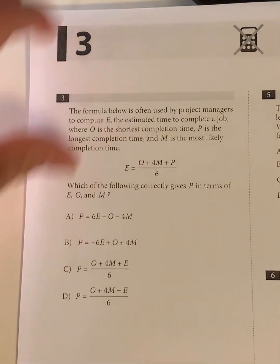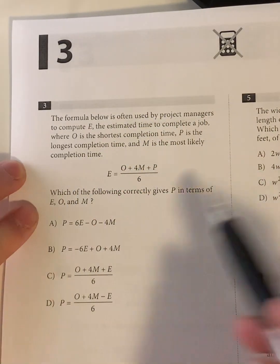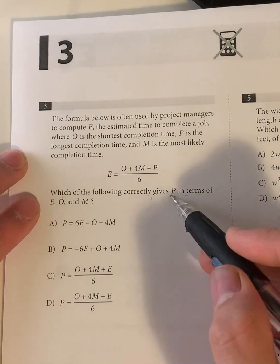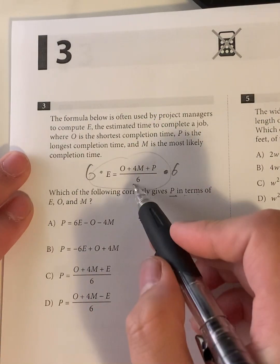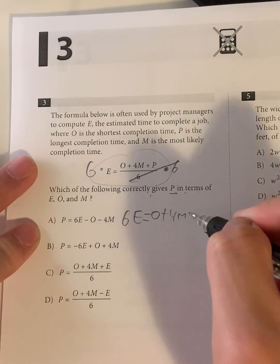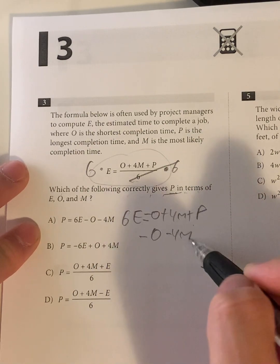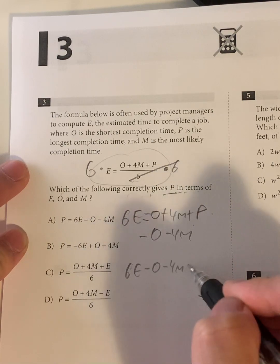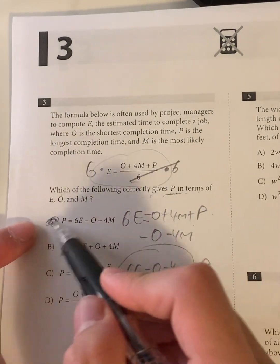Moving on. Question 3. The formula below is often used, blah, blah, blah. We're going to skip this part. So the question is asking which of the following correctly gives P in terms of E, O, and M. So we have to isolate P given this equation right here. So the first thing I'll do is multiply both sides by 6. Doing so eliminates this fraction, which we don't want. So that gives us 6E is equal to O plus 4M plus P. Now in order to get rid of everything that's not P on one side, we're just going to subtract O and subtract 4M. So that gives me 6E minus O minus 4M is equal to P. Well, we have isolated P, meaning your answer should look like this. Also meaning your answer should be A.